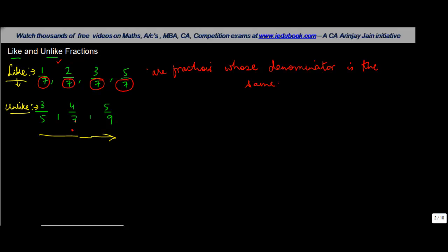So if you write 4 by 7 here also, then also in these set of fractions remains like. Whereas in the case of unlike fractions, the denominator are different.